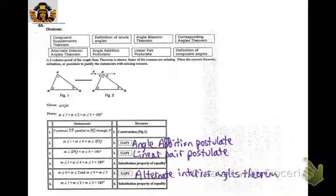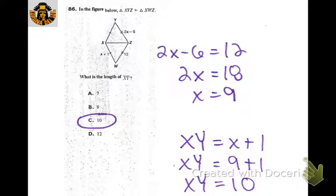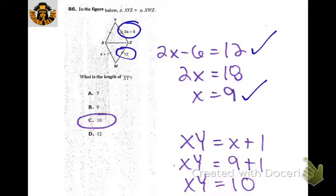Angle 1 and angle 4 — that's the angle addition postulate. XPQ adding with angle 5 creates a linear pair. Angle 4 is congruent to angle 2 — if the lines are parallel, they're alternate interior angles. For the length of XY: since XY and XW are congruent — same tick mark — we set the expressions equal. We get x equals 9. Then XY is 9 plus 1, so the length is 10.